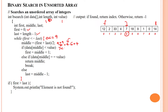7 less than searching value 1 — that is false. Then the else-if statement checks: is data of middle 7 equal to searching value 1? That is also false. So we update last index with middle minus 1. Middle index is 4, so 4 minus 1 is 3. Last index is now updated to 3.